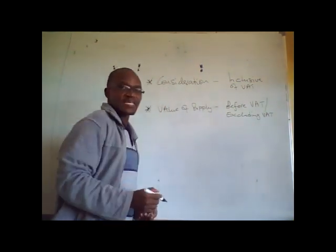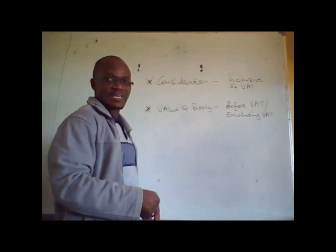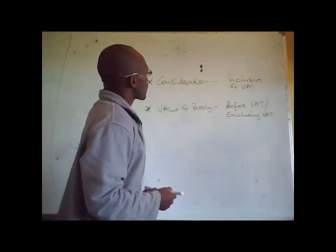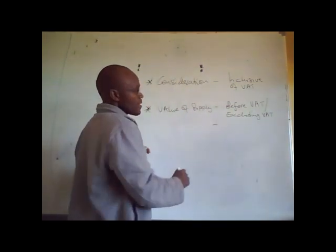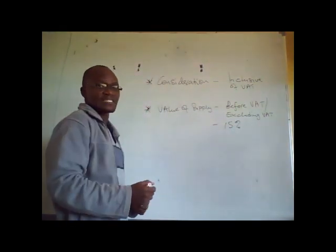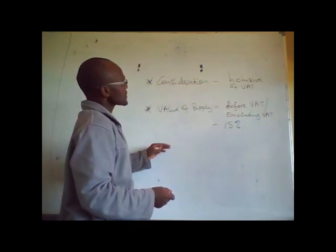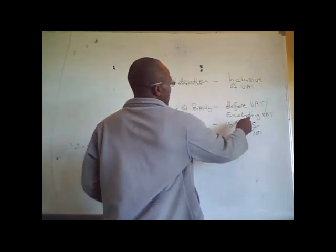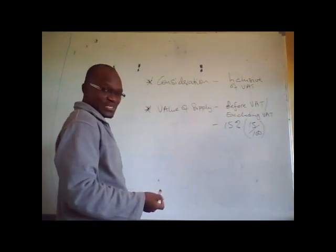So what are the implications of having a consideration and what are the implications of having a value of supply? When you are dealing with value of supply, to get VAT you simply multiply the figure — the value of supply — by 15%, because 15% is our standard rated VAT for 2019 that we are dealing with. So you just say 15 over 100, multiplied by the value of supply, and you get your VAT component.